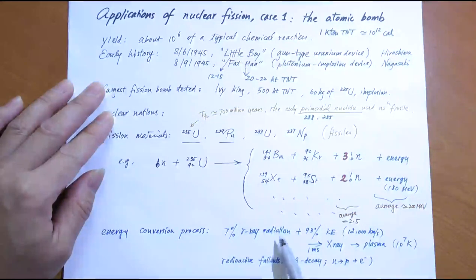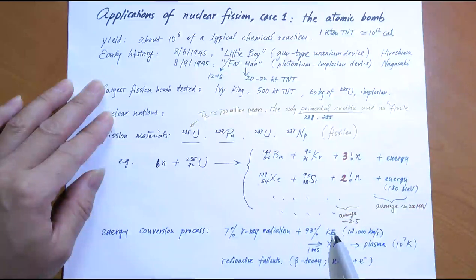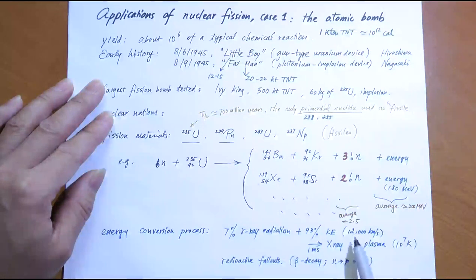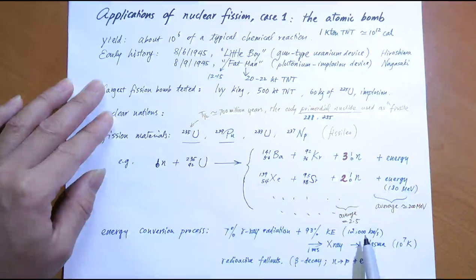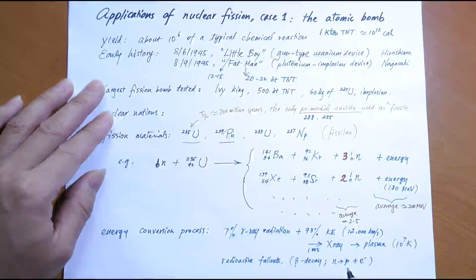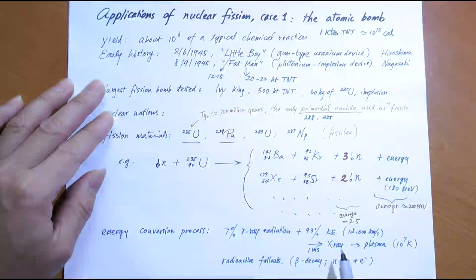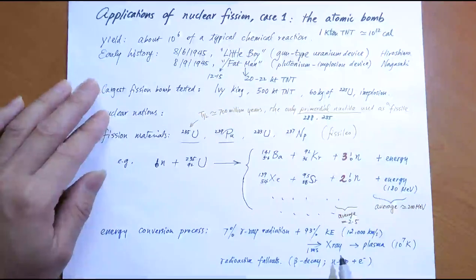These particles are temporarily trapped inside the bomb because of the shield — what we call the temper. Within a very short period they don't move far; they bombard and collide with particles in the temper, which is typically made of Uranium-238. In doing so, they give off X-rays. On a timescale of a millisecond after detonation, these X-rays become the primary source of energy, which later turns into heat — that's the explosion you see.